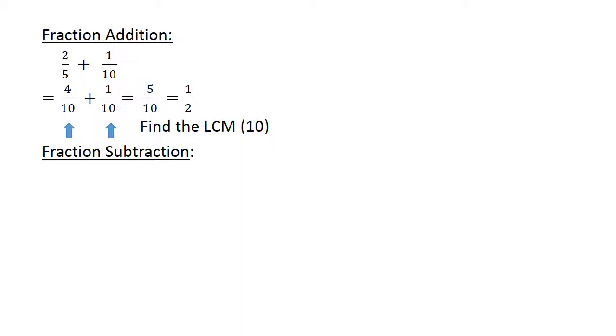Fraction subtraction. 4 over 10 minus 2 over 20. Again you cannot add. You have to find the lowest common multiple, which is 20. Once you have done that, you can subtract. 8 minus 2 equals 6 over 20, and you have 3 over 10.